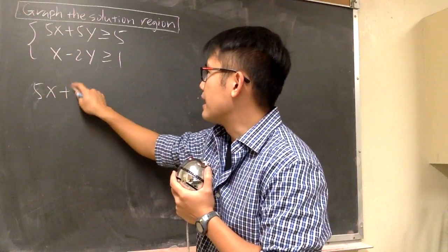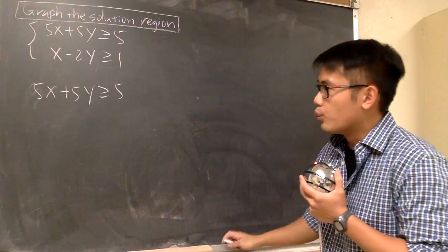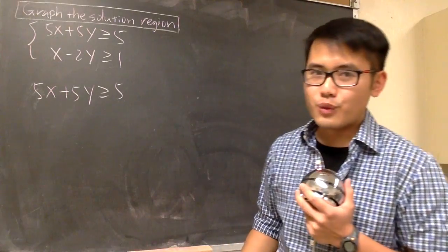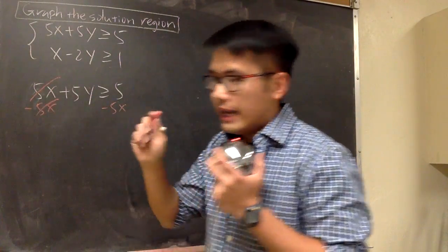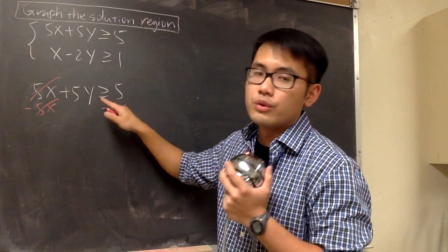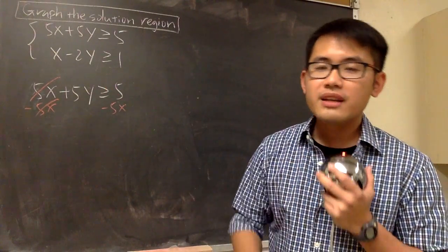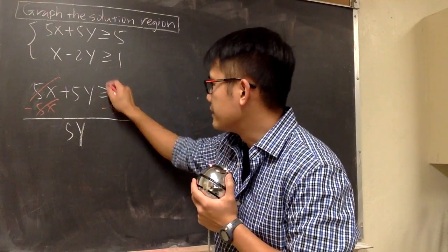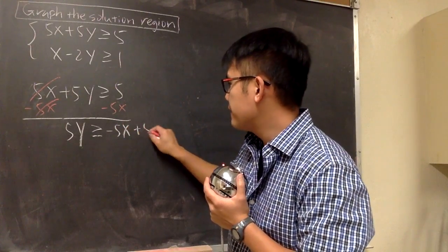We have 5x plus 5y, and this is greater than or equal to 5. We'll have to get the y by itself first so that it will be easier for us to graph. Let's minus 5x on both sides. We are just subtracting the 5x, therefore we don't need to switch the inequality symbol. We are not multiplying or dividing by a negative number, so this stays the same. We will have 5y is greater than or equal to negative 5x plus 5.